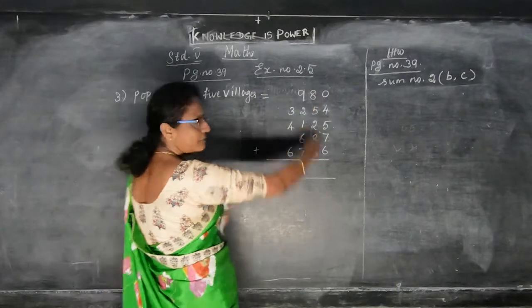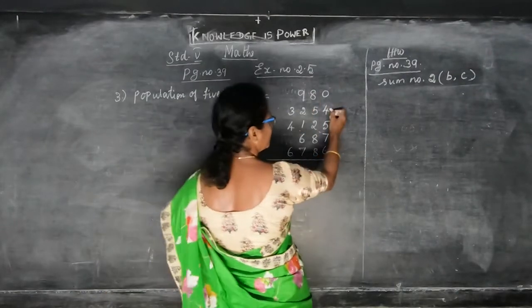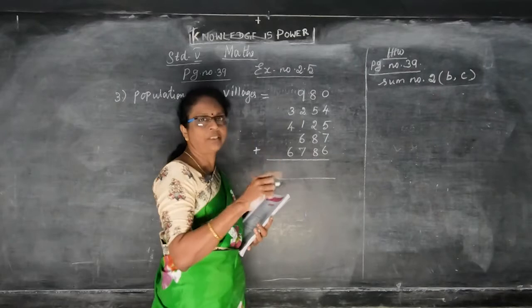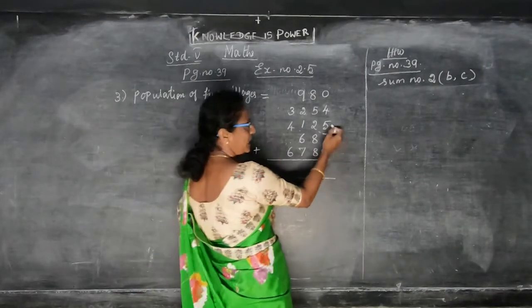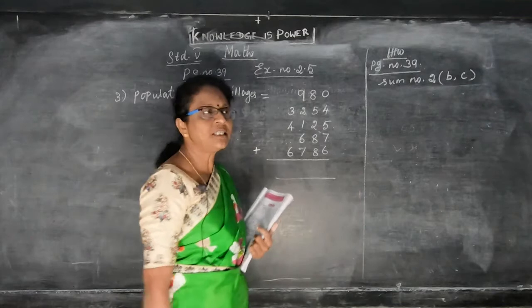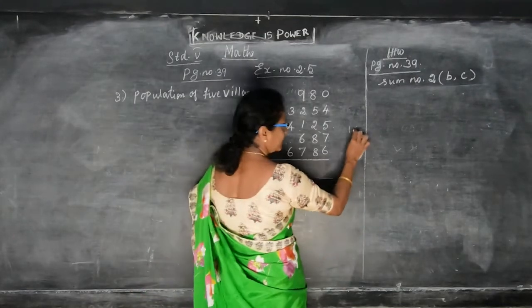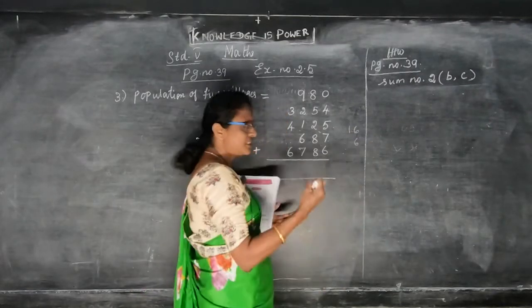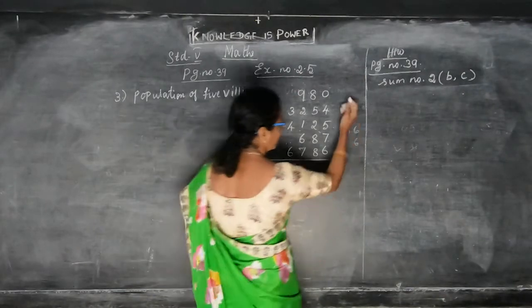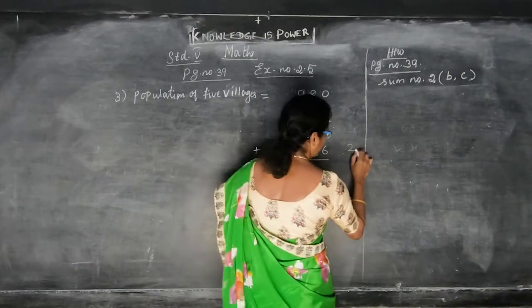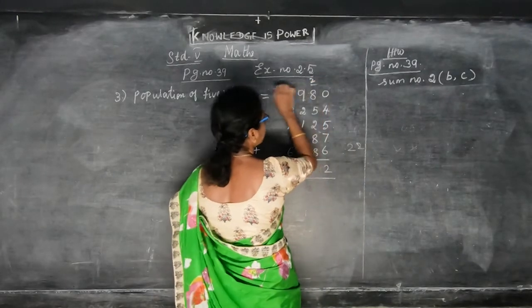Straightaway write the numbers and start adding. 0 plus 4 is 4. 4 in the mind and 5 in the fingers — gives you 9. 9 in the mind and 7 in the fingers — gives you 16. 16 in the mind and 6 in the fingers: 17, 18, 19, 20, 21, 22. So put 2 and carry 2 over to the next.